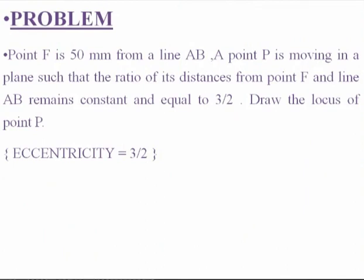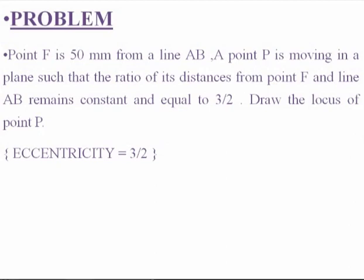Now moving to the third method of construction of hyperbola, that is the directrix-focus method. I will explain this method with the following example: the distance of the fixed point is given as 50 mm and eccentricity is given as 3/2 — which is greater than one, as required for a hyperbola. The problem asks you to draw the locus of point P moving in a plane such that the ratio of its distance from a fixed point to a fixed line remains constant and equal to 3/2.